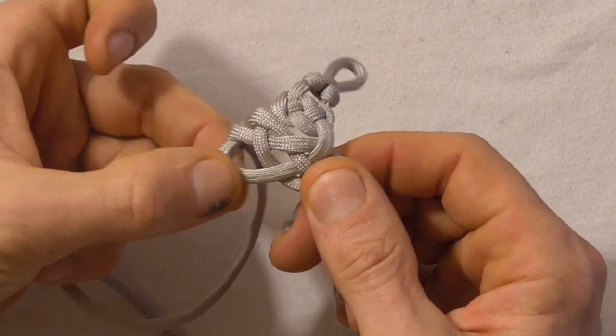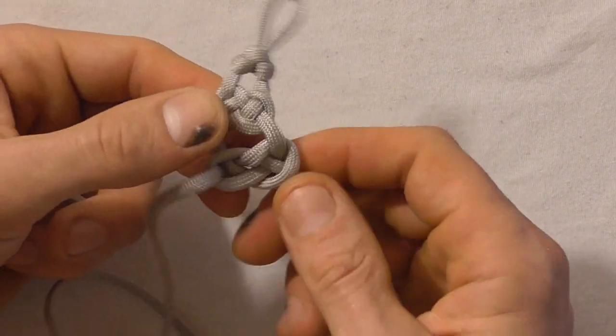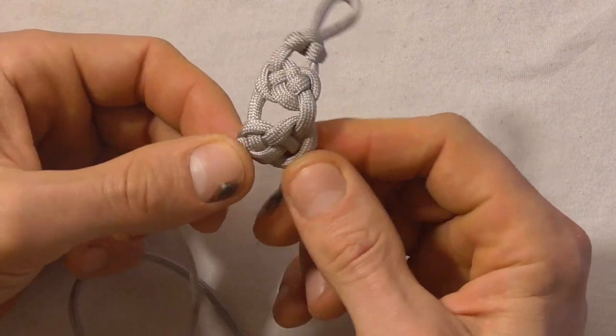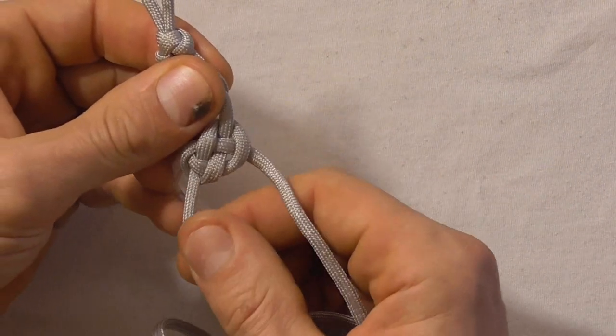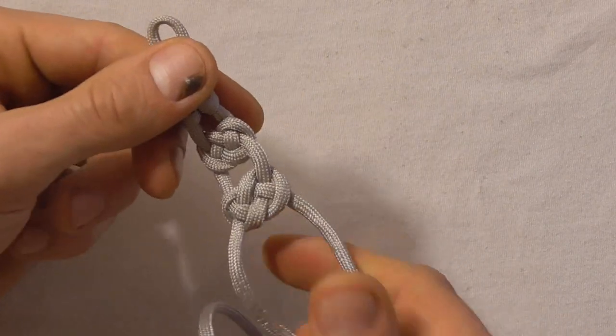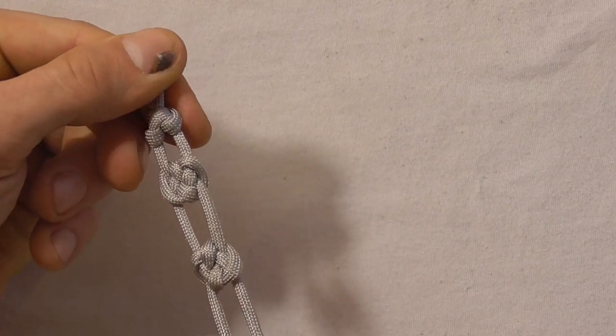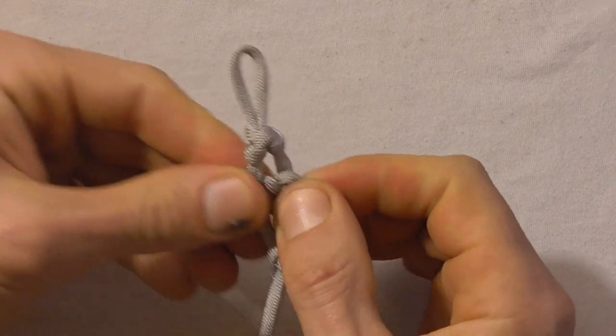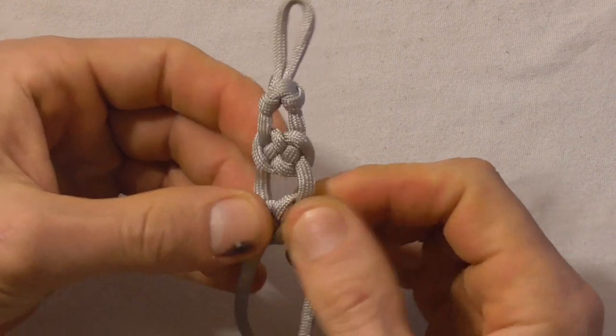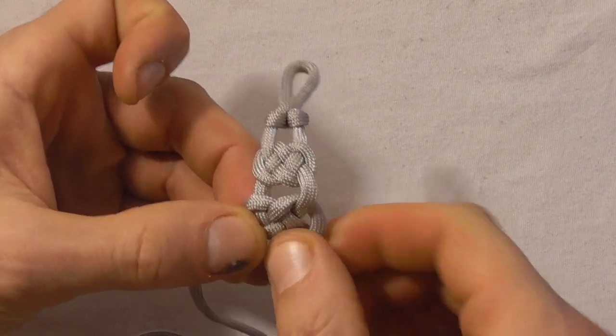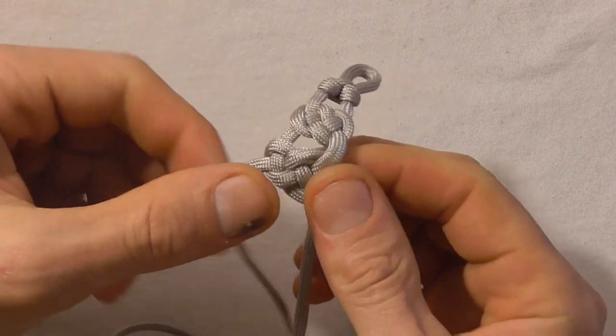Again just adjust the knot. Pull the slack out without collapsing the knot. And then again grab the top loop and these two strands and give them a good pull. Because we want to take every bit of slack out so the bracelet doesn't stretch after we've made it. And again adjust these two top legs.